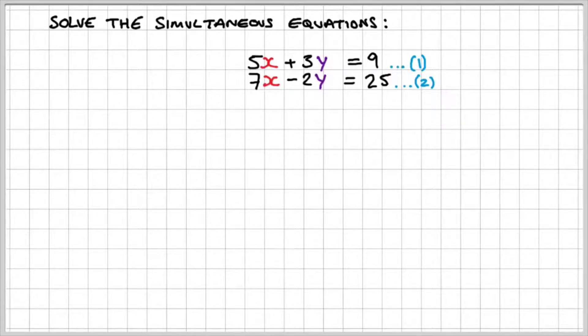So what you'll notice is you cannot multiply just one equation to get the same coefficient for x and y. So what we're going to do is we're going to multiply equation 1 by 2 and equation 2 by 3.